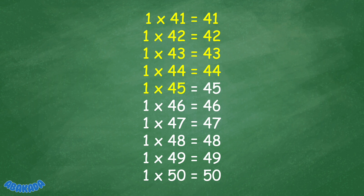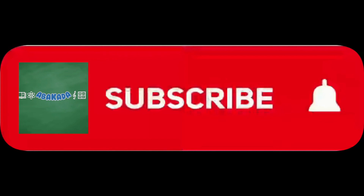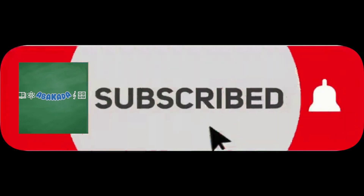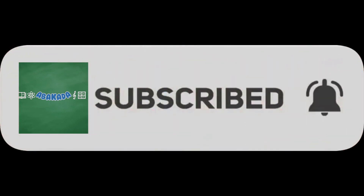1 x 45 equals 45, 1 x 46 equals 46, 1 x 47 equals 47, 1 x 48 equals 48, 1 x 49 equals 49, 1 x 50 equals 50.